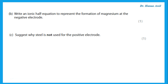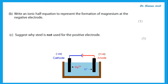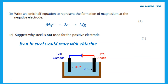Write an ionic half equation to represent the formation of magnesium at the negative electrode. We are doing electrolysis of molten magnesium chloride, so we have only magnesium ions and chloride ions. The magnesium ions are positive and go to the negative electrode to gain electrons. Magnesium²⁺ takes two electrons — so the charges are balanced — to form magnesium. Steel is not used as a positive electrode because steel is an alloy of iron and the iron would react with chlorine. We want something inert that would not react with the ions being electrolyzed.